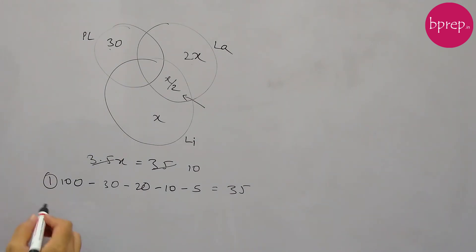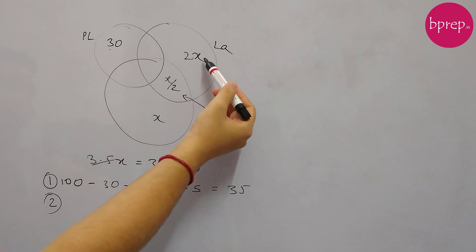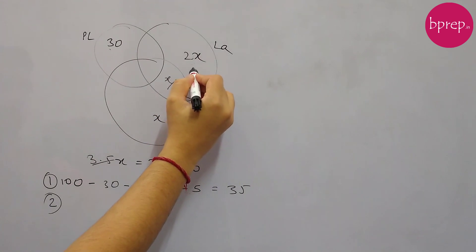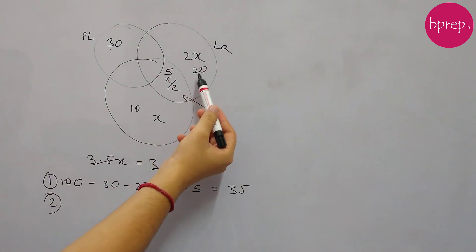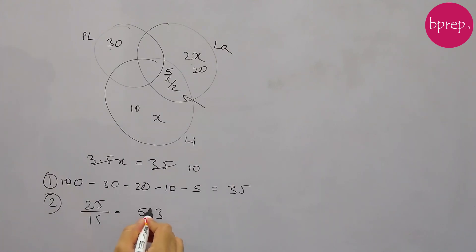And second part of this problem: what was the ratio of schools having laboratory and those having library? So how many schools are having laboratory? Laboratory is 2x plus x by 2, so this 2x is 20 and x by 2 is 5, x is 10. So ratio of schools having laboratory to those having library, laboratory is in total 20 plus 5, 25 schools, and library is 10 plus 5, 15 schools. So this is 5 to 3, so we can say this is 5 to 3.